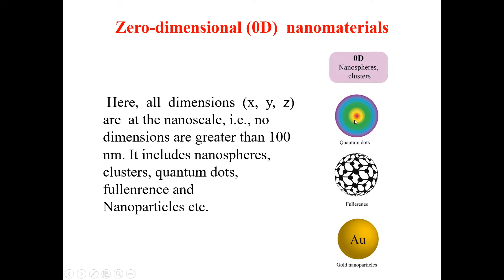These are the types of zero-dimensional materials. What do we actually mean by zero-dimensional materials? By zero-dimensional material we mean all those materials whose all dimensions — that is X, Y, and Z — lie within the nanoscale range, meaning no dimension is greater than 100 nanometers.